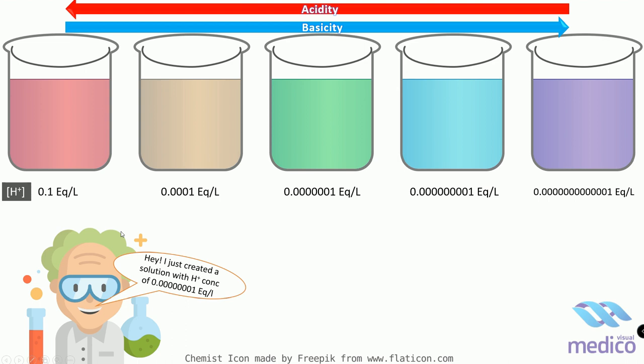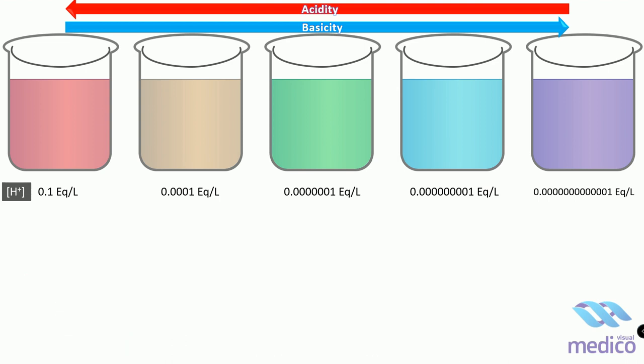Well one way is that we can write it down in terms of power of 10. We can write the hydrogen ion concentration of solution in powers of 10s, 10 raised to power minus 1, 10 raised to power minus 4 and so on, but even that isn't an efficient way.